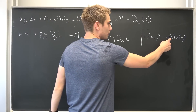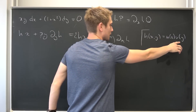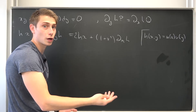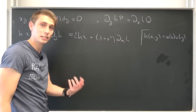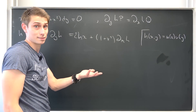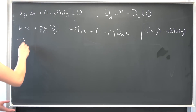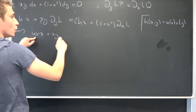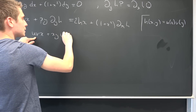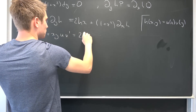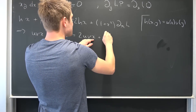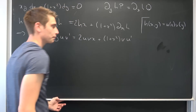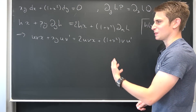I want you to notice: u is just with respect to x and v is just with respect to y. Meaning if we take the partial derivative in x, this is nothing but v times u prime — the partial of a single-variable function is just a simple derivative. So h = u times v. We get: uv times x plus x times y times u times v prime, equal to 2uv times x plus 1 plus x squared times v times u prime.